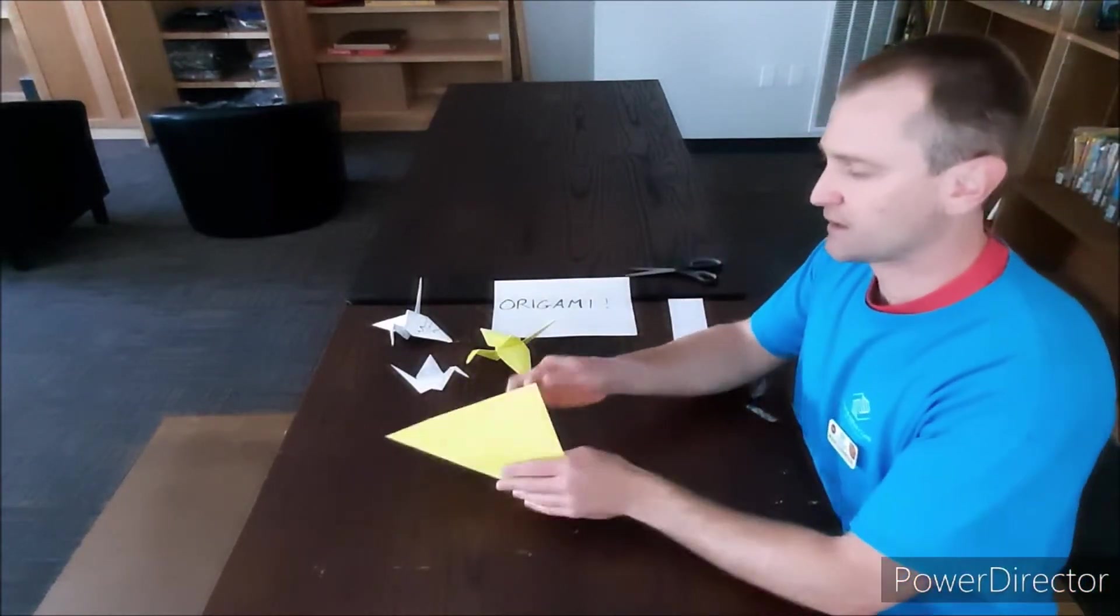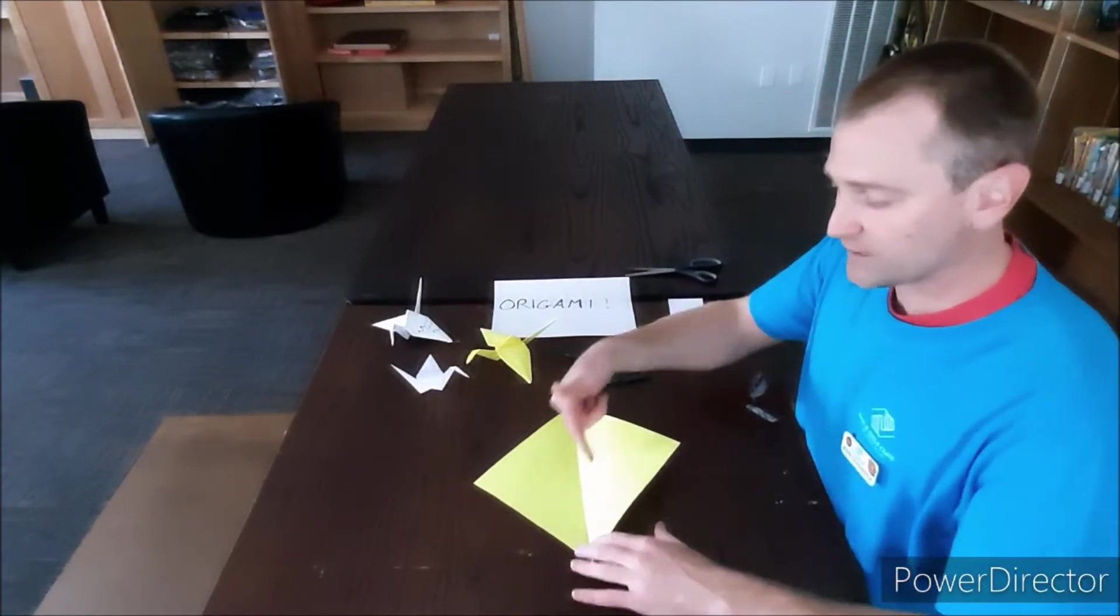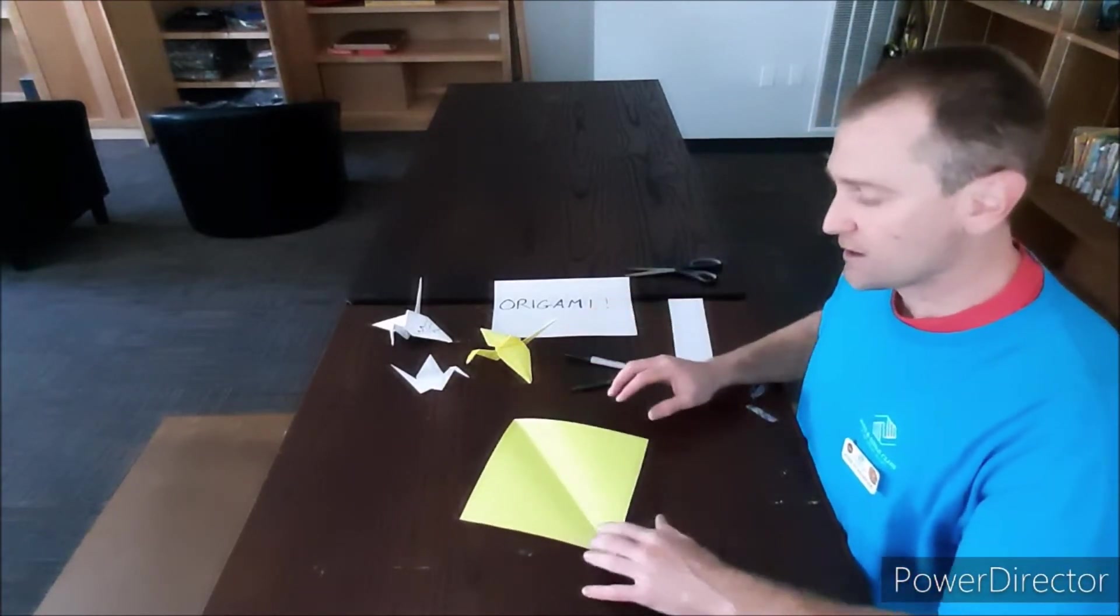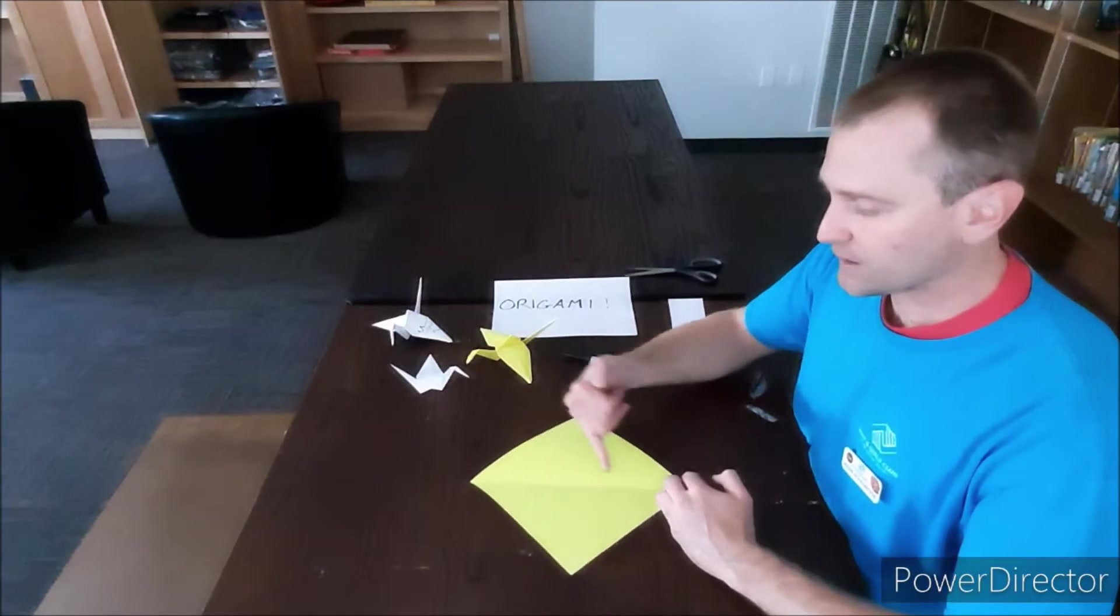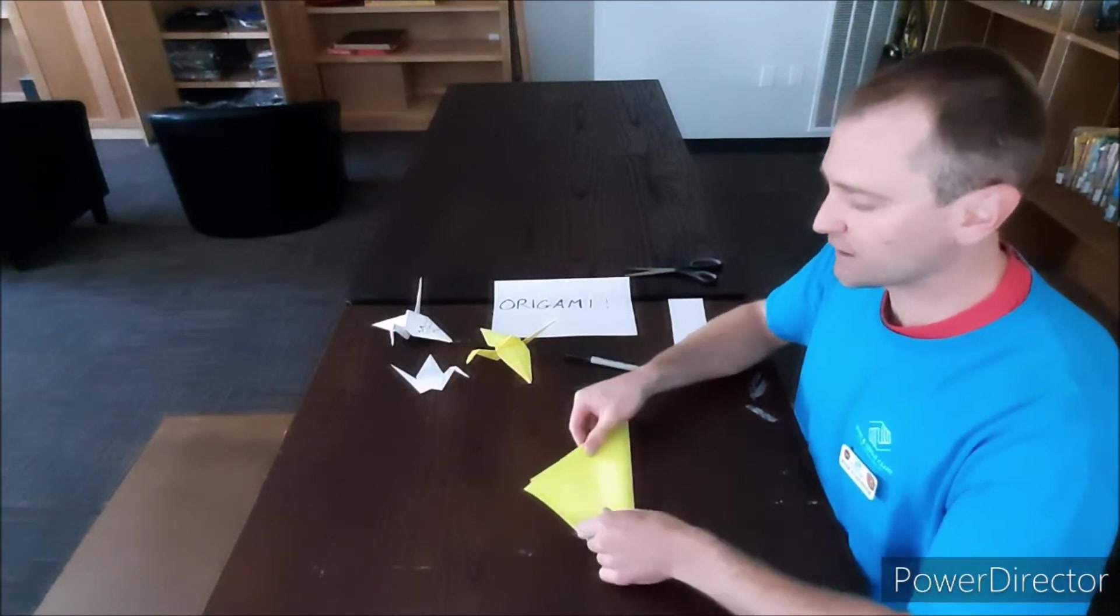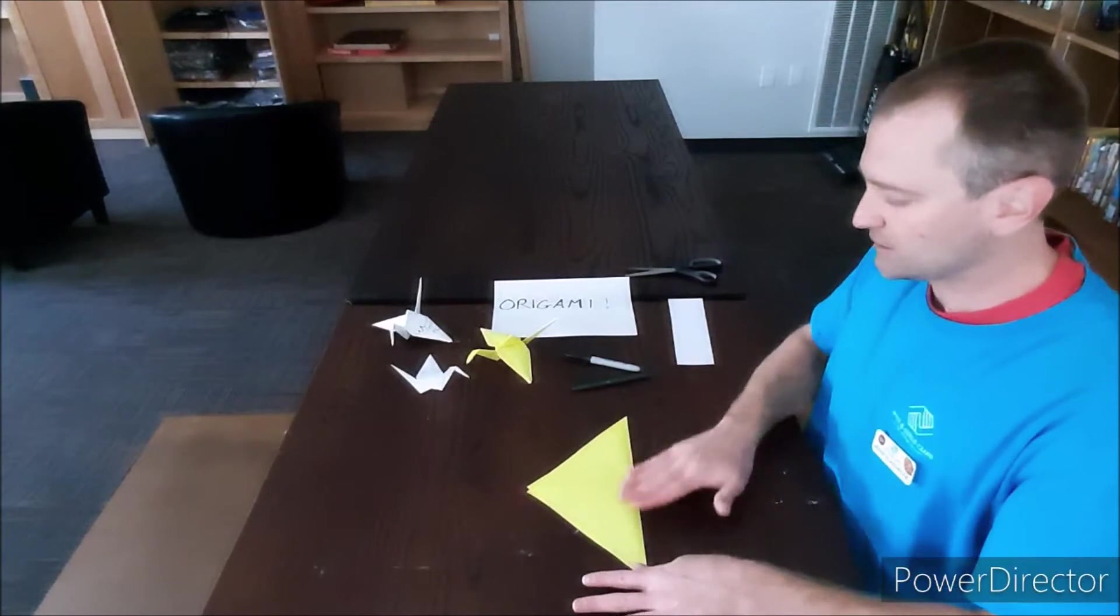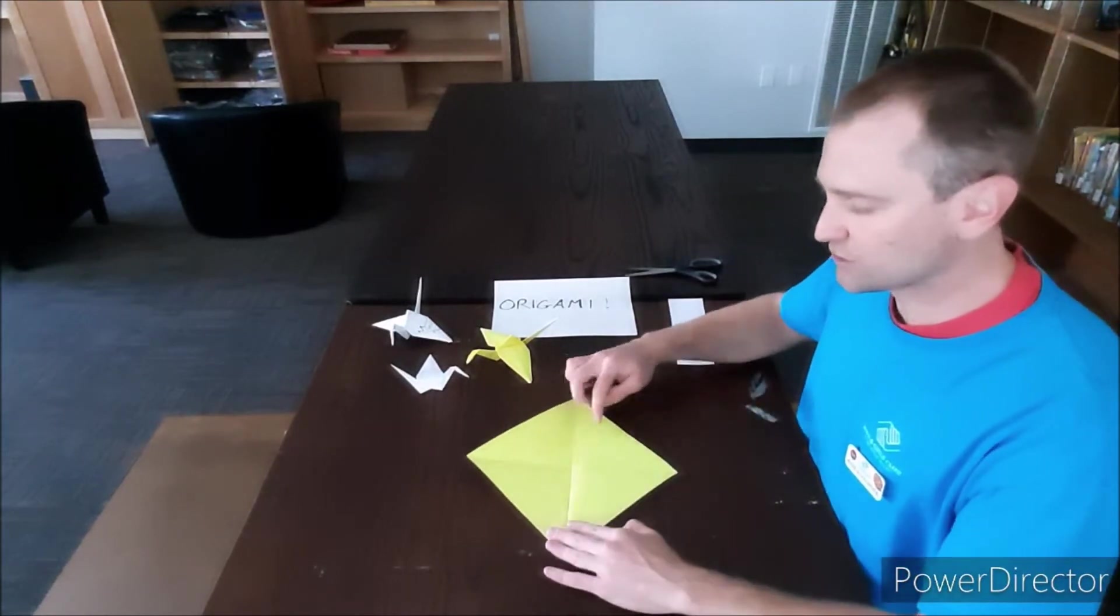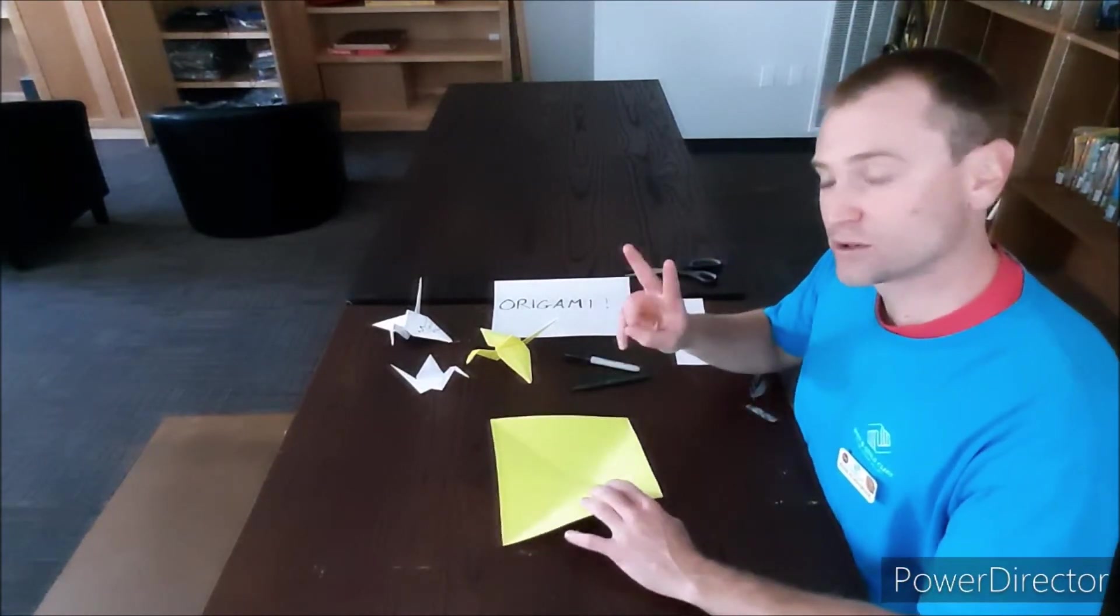Okay, so got my square. I even have one line down it. That's good. So we're going to actually fold it corner to corner to get another line the opposite direction here. So now we have two creases. We have to make two more creases.